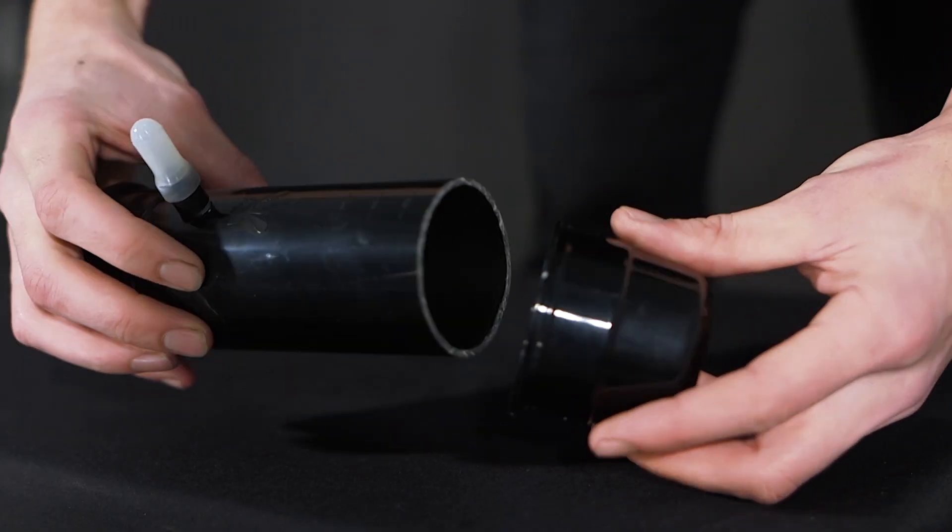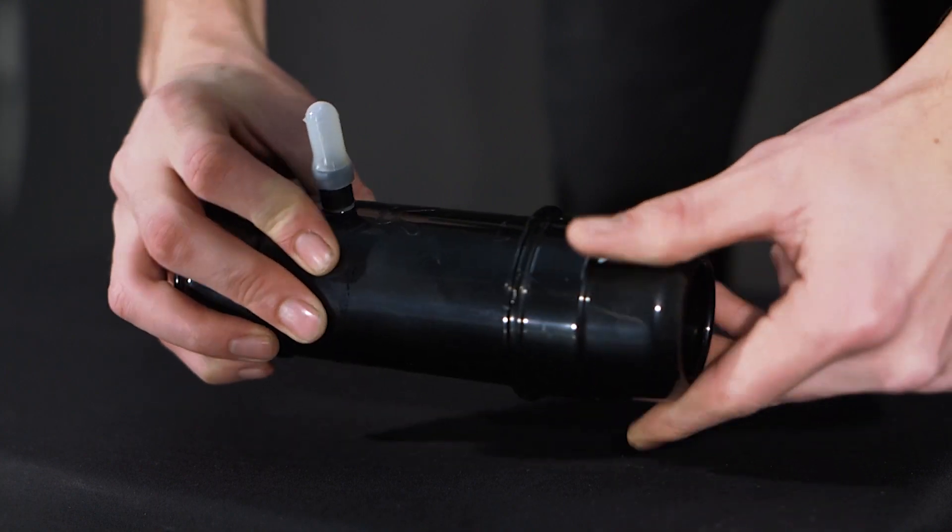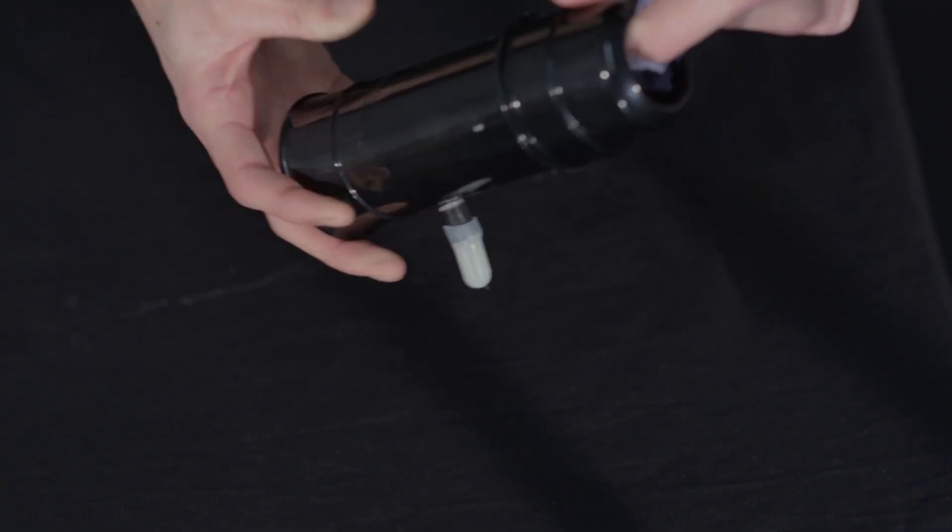Put the end cap onto the receiver and rotate it to ensure an equal spread of the glue and an airtight fit between the two pieces. Clean off any excess glue from both inside and outside of the joint using a damp cloth. You should then leave the glue to set for a minimum of 30 minutes.